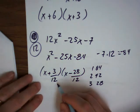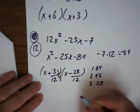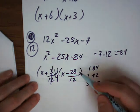3 twelfths would be 1 fourth. And 28 over 12.